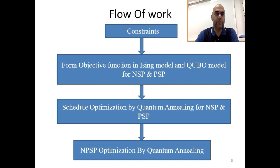The flow of work is going to be as follows. There will be a discussion of constraints that we considered in this problem. The objective function that was formatted in the form of the Ising model and the QUBO model for the NSP, which stands for the nurse scheduling problem, and the PSP, which stands for the physician scheduling problem.